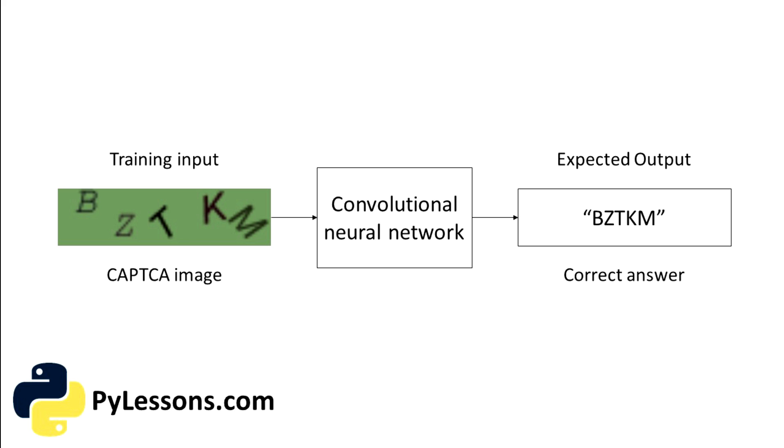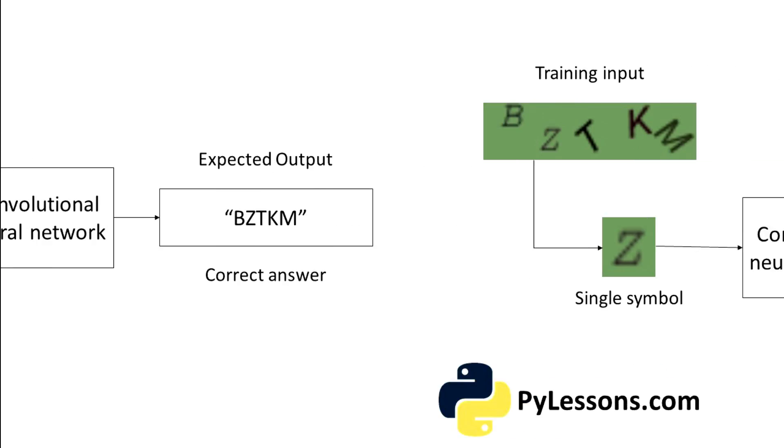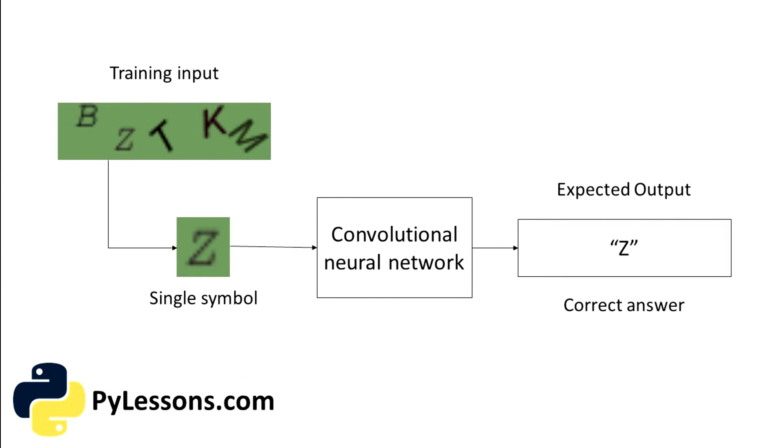With enough training data collected, our approach must work, but we can make the problem even simpler to solve. The simpler the problem, the less training data and less computational power and time will need to solve it. We know that CAPTCHA images are always made up of some amount of separated symbols. If we could somehow split the image apart so that each letter would be a separate image, then we only need to train the neural network to recognize a single letter at a time.